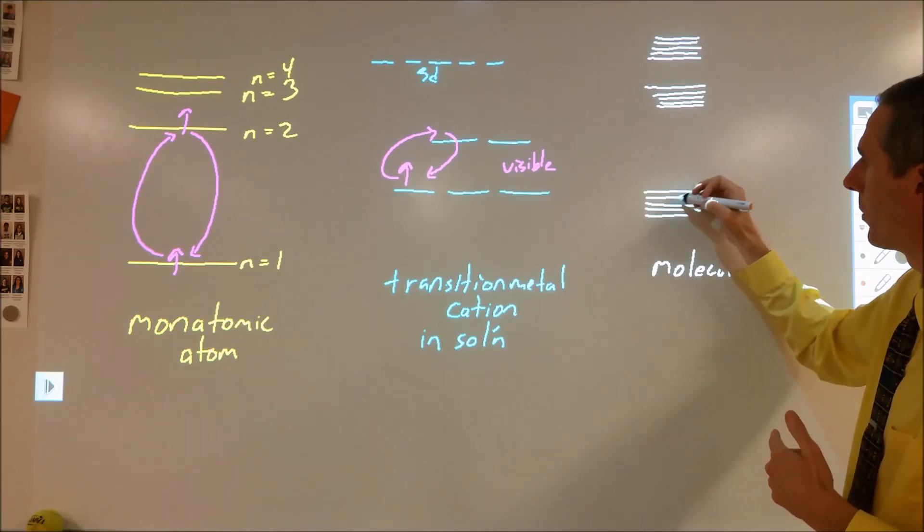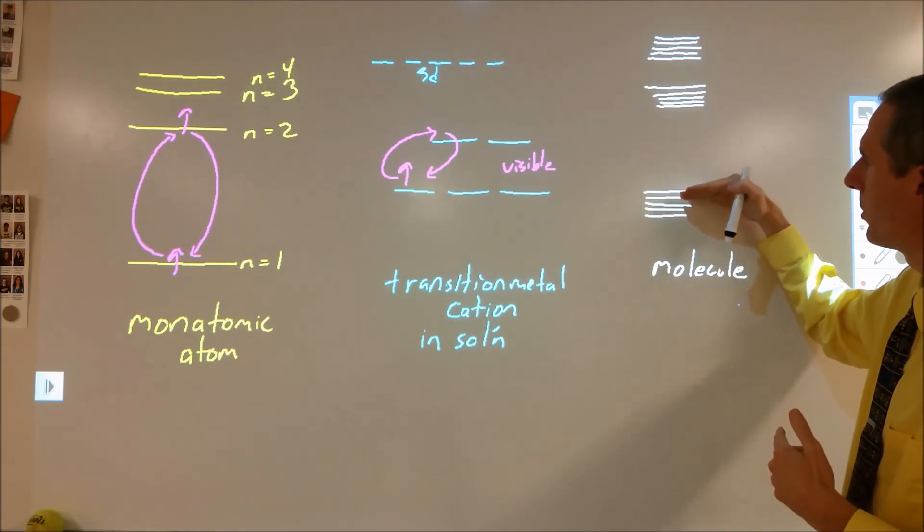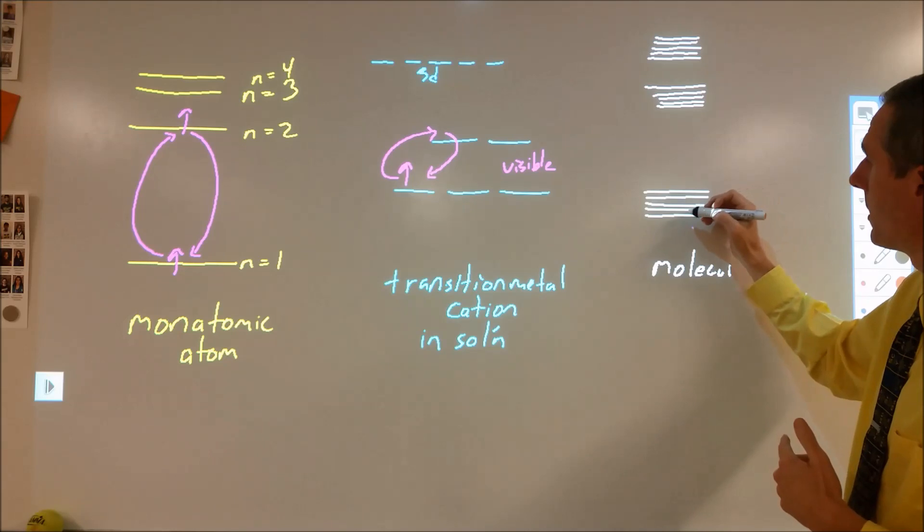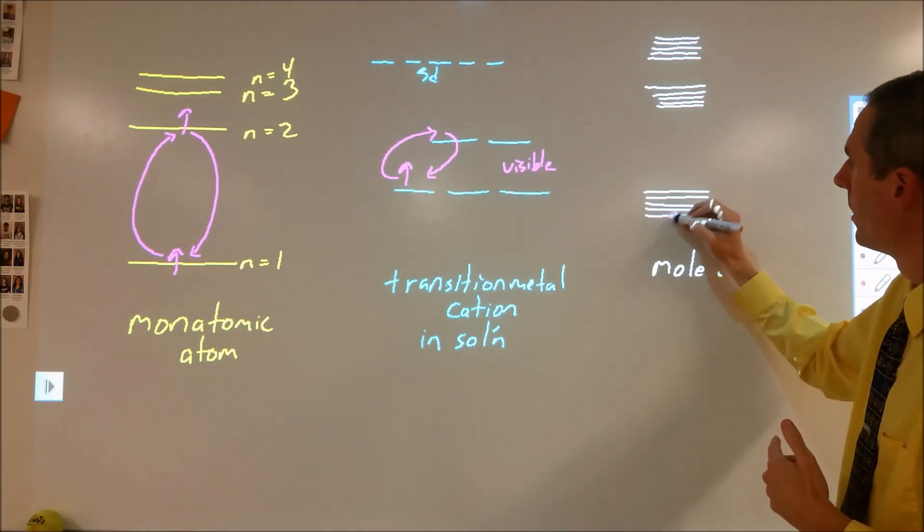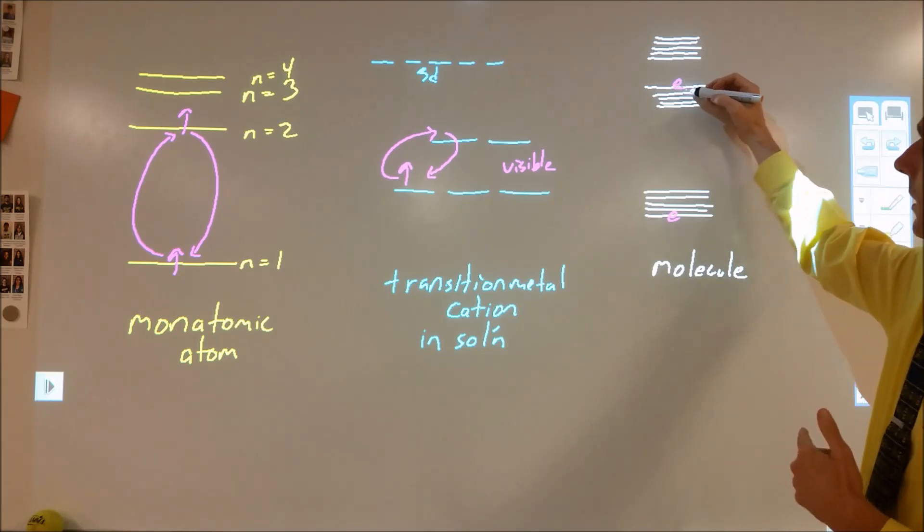Molecules will have electronic states just like this, but they will also have a vibrational state and rotational state. They have these combinations where you can have a low ground state for your electronic state but various vibrational states and rotational states. You end up with these different levels.